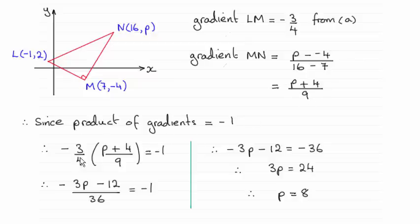So since the product of the gradients must be minus 1, just multiply the two together equals minus 1 and from here I've just got this equation.